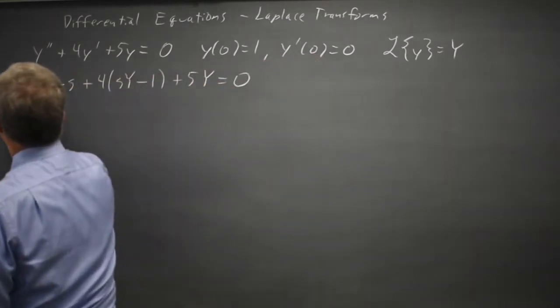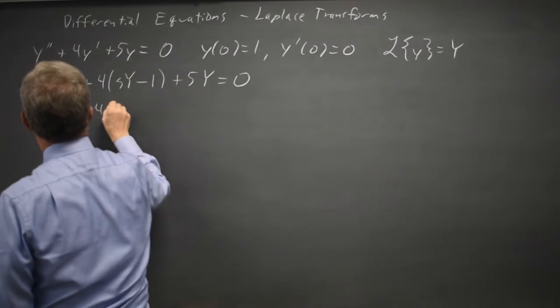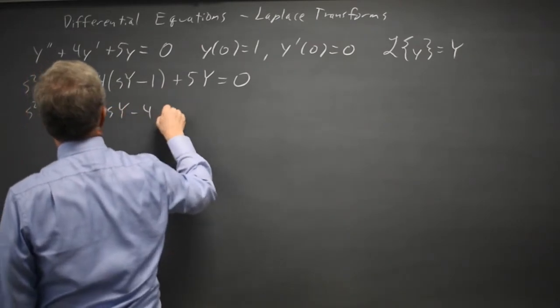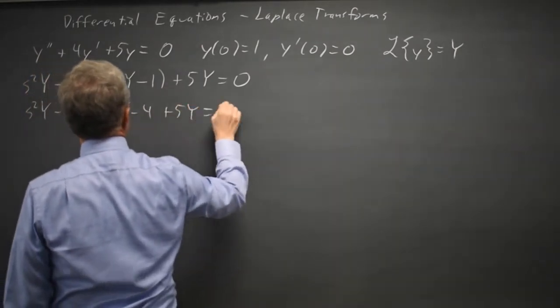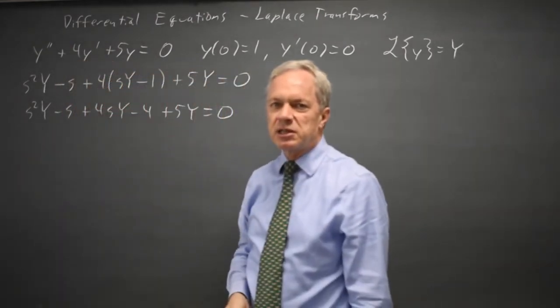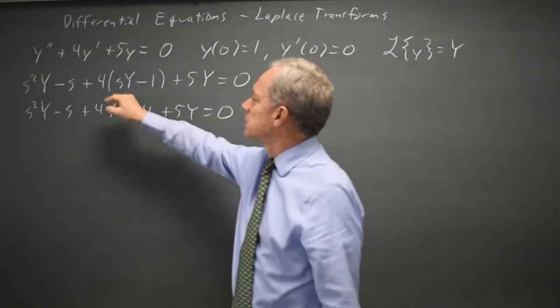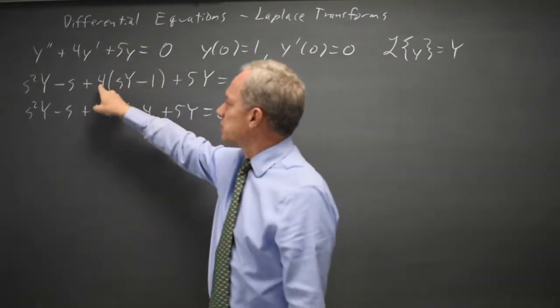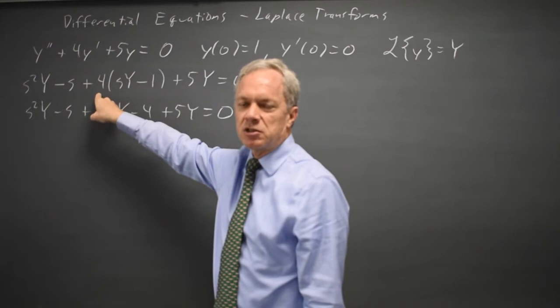Distributing: s squared Y minus s plus four s Y minus four plus five Y equals zero. I'll generally do that as two separate steps because otherwise the process of figuring out what these terms are, I sometimes forget to distribute this coefficient.